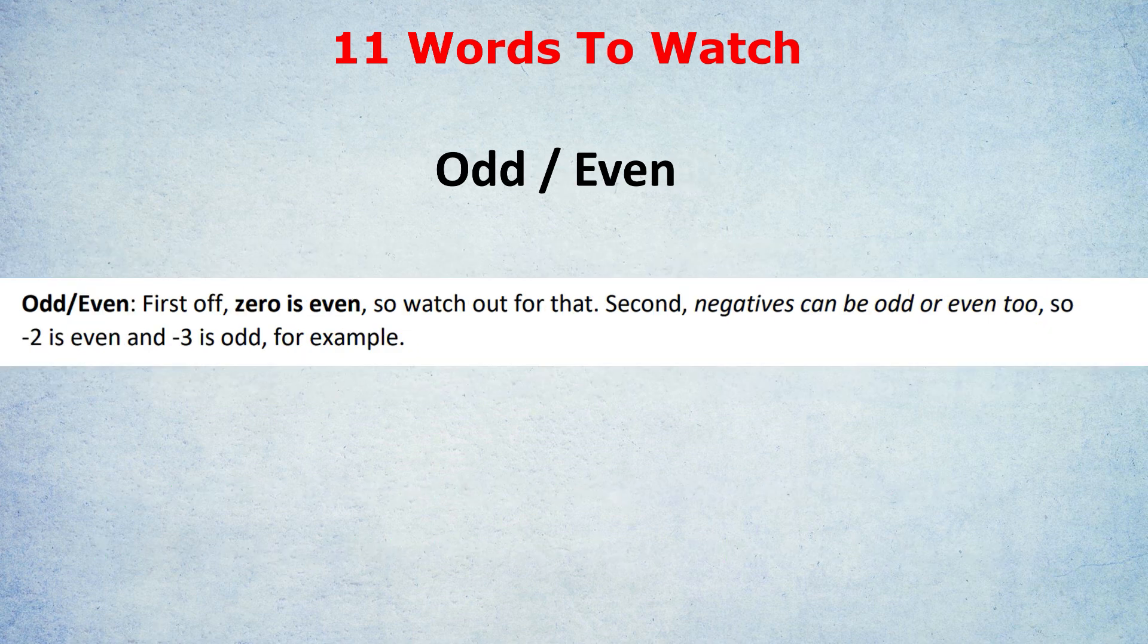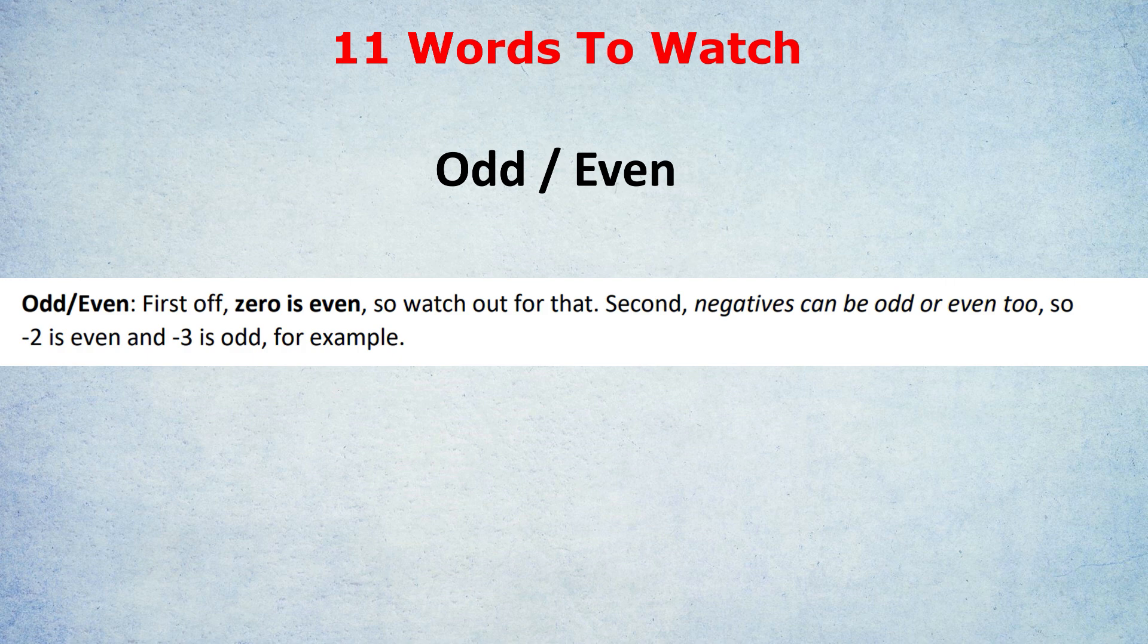That brings us to the next set, odd versus even. Obviously, most of you know the difference between these two words. Odd numbers are 1, 3, 5. Even numbers, 2, 4, 6. But there's one thing I wanted to clarify. That 0 is an even number. It does count as an even number. And negatives can also be odd or even. For example, minus 1 is an odd number. Minus 6 is an even number. So yes, negatives count as well. And even 0 counts. 0 is even.